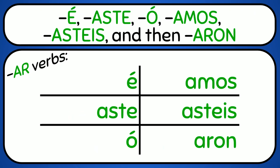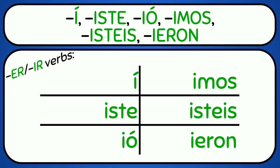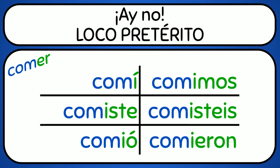É, aste, ó, amos, asteis, aron. That's just the way it goes with that loco preterito. É, aste, ó, amos, asteis, aron. Ay no! Loco preterito!